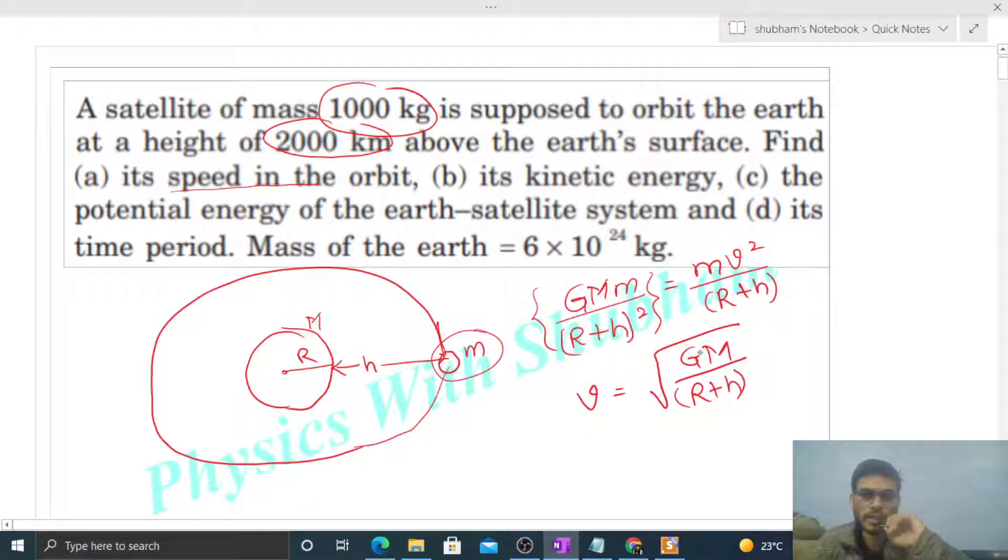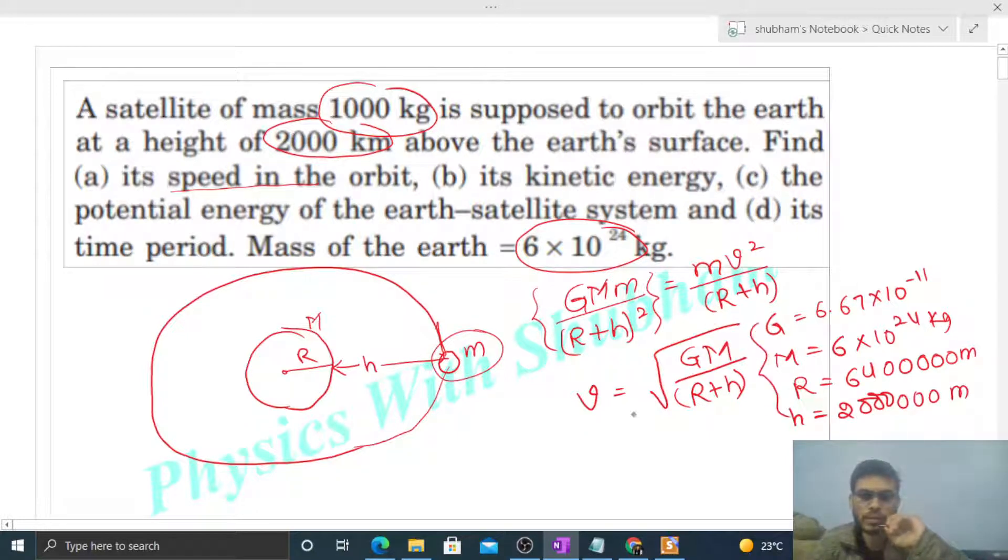Everything is given here. Capital G value is 6.67 × 10^-11. Capital M will be 6 × 10^24 kilogram, this value is given. Radius of Earth will be 6400 kilometers, that is in meters. And h will be simply 2000 kilometers, that is in meters. So putting these values, we can easily find out the value of the speed, that will be in meter per second.